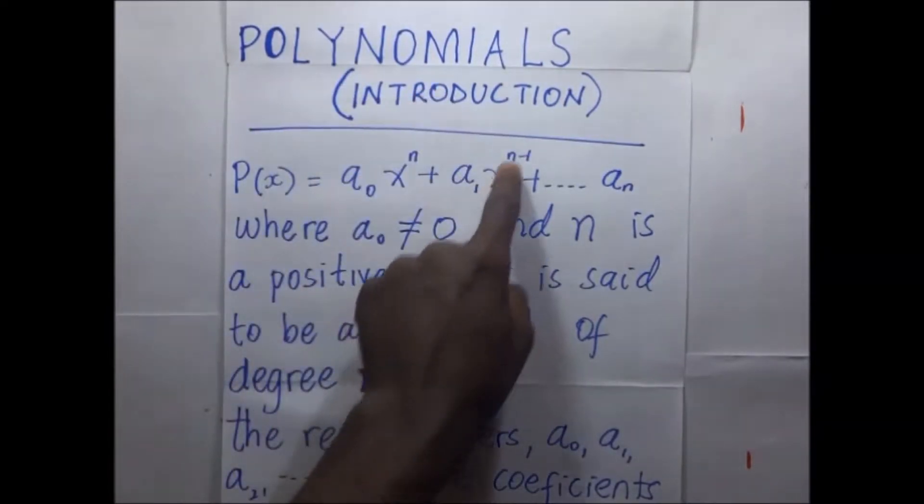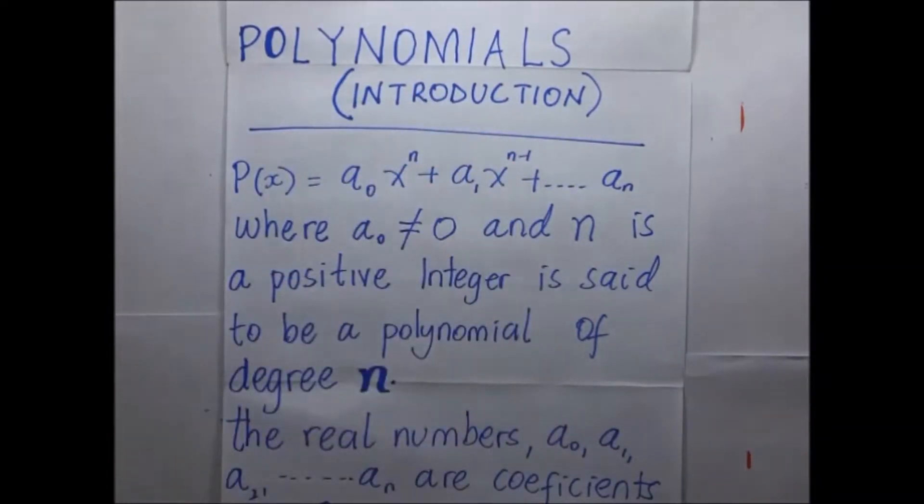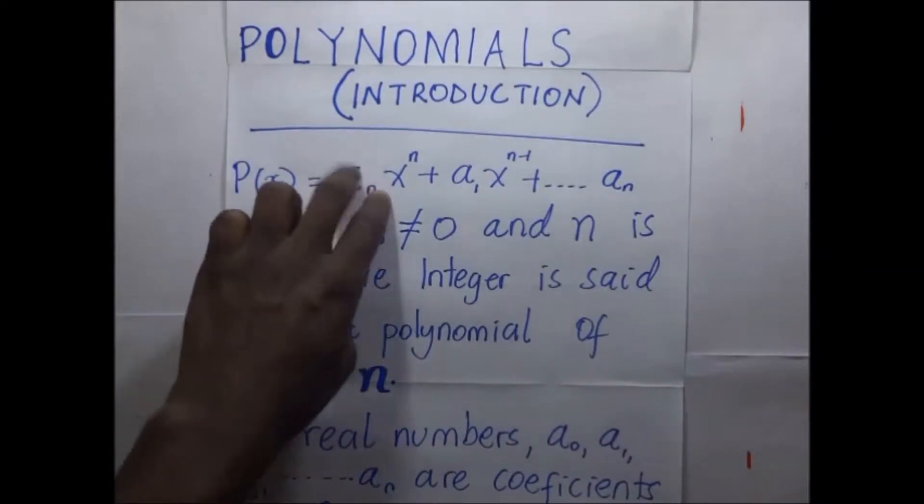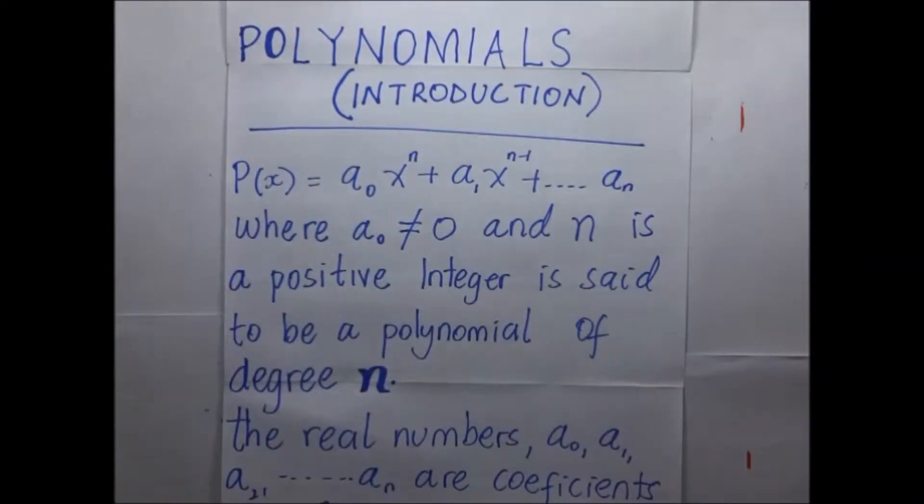These equations can either have powers to the power two, to the power three, to the power four, but this value of n should be a positive integer. And this value of a should not be equal to zero for it to be a polynomial.